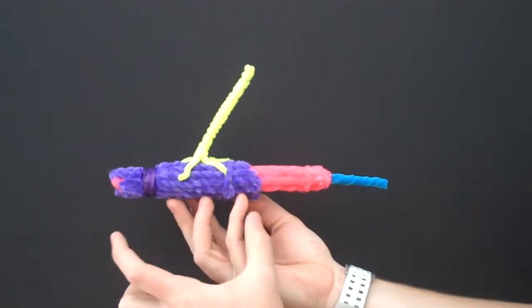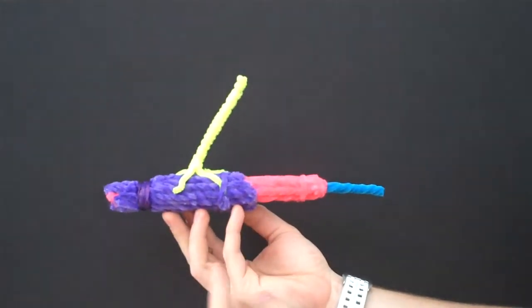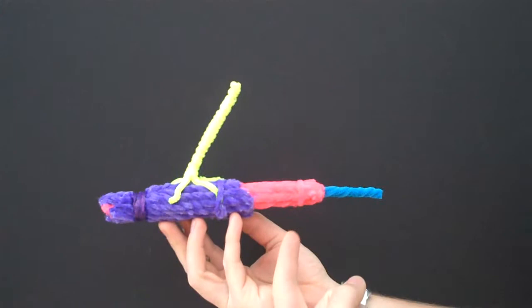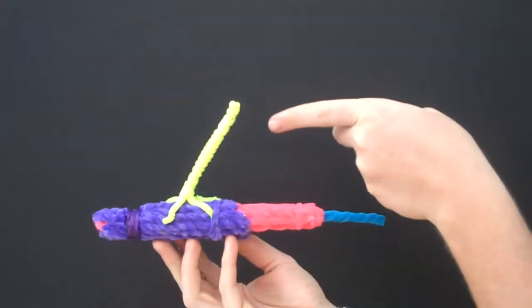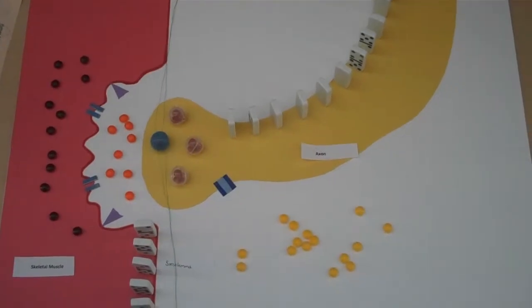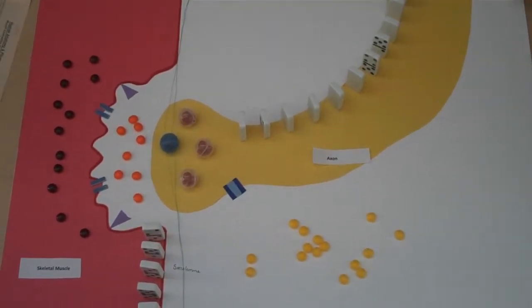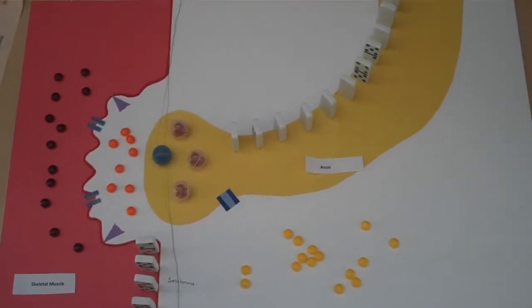Skeletal muscles are composed of fascicles. Fascicles are many myofibers. The myofiber is made of myofibrils, and this is the axon of a neuron. Contraction occurs when a signal is sent through a neuron to contract a skeletal muscle.